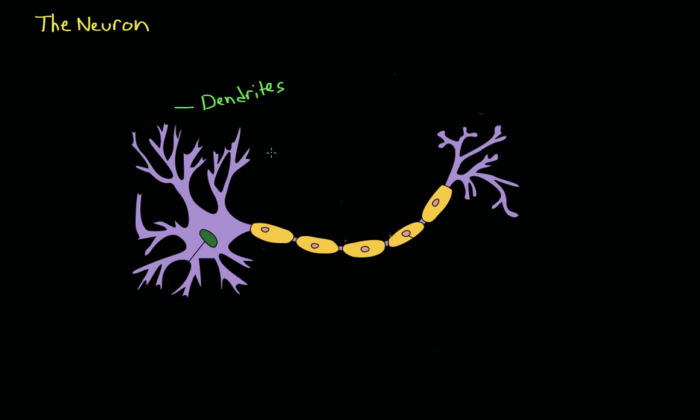And the dendrites are responsible for collecting information from other cells. So if you can imagine a lot of cells all connecting to these dendrites, they're all sending messages to the dendrites and the dendrites are listening to all of them. From there, the messages go to the cell body which is also called the soma. And this is the part of the cell that also contains the nucleus and everything else.